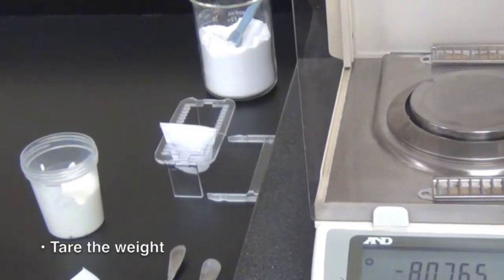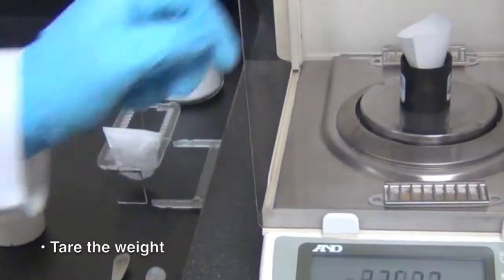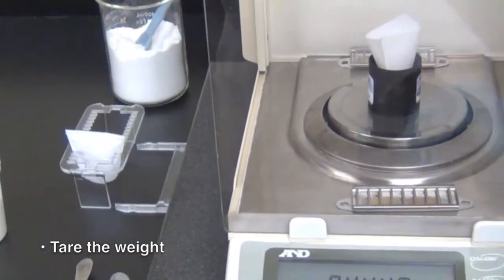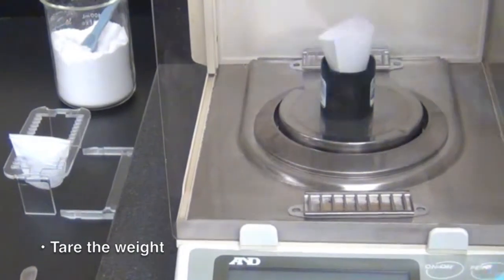After the weight of the bag has been recorded, put the bag in the bagway holder, place it on the balance, and zero the weight.